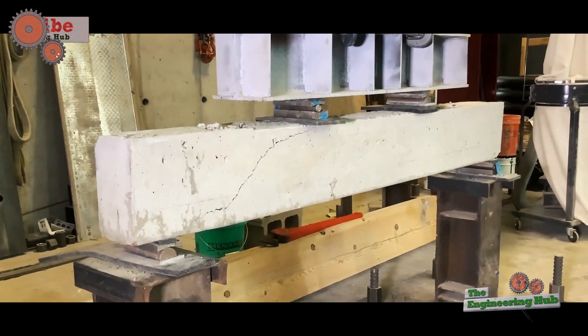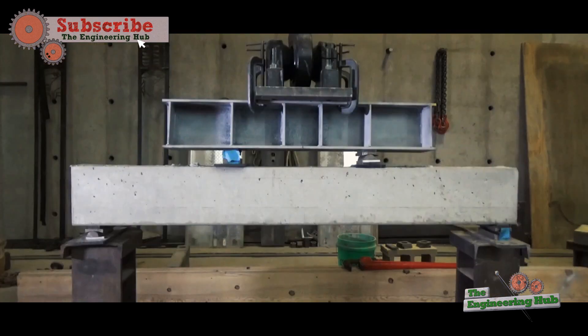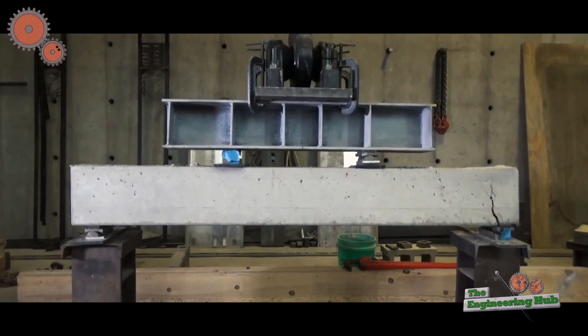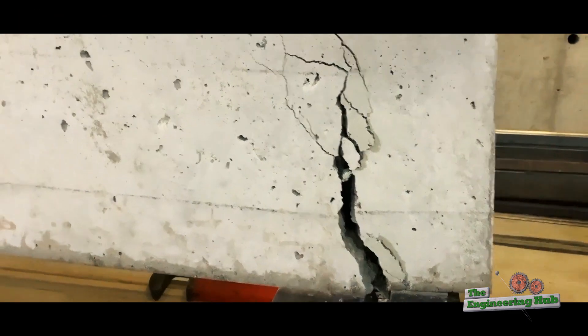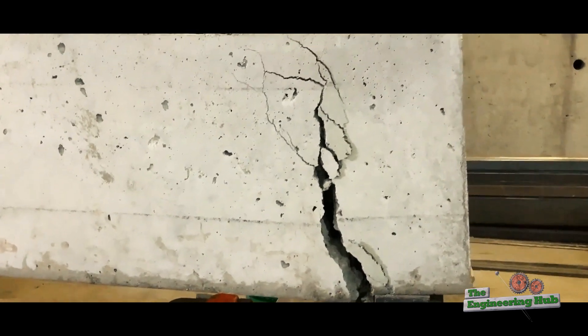Shear failures, for example, usually originate at the supports of the beam since this is where the shear force is largest. Local crushing failures or buckling failures are other examples that exhibit their own unique failure modes.